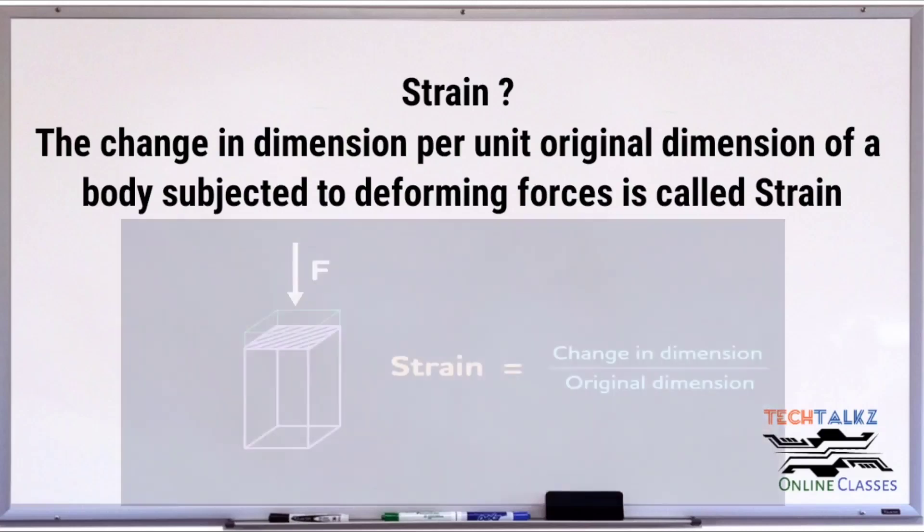What is strain? Strain is defined as change in dimensions per unit of original dimensions. When any object is under stress, it will change one or more of its dimensions. Change in dimensions will be based on the type of force applied and type of the material.